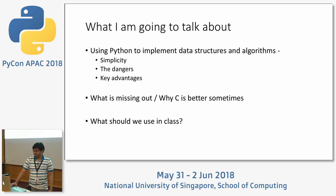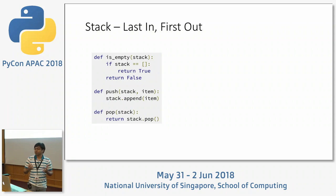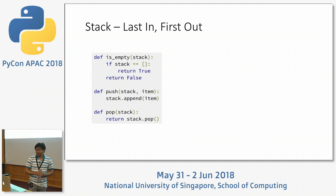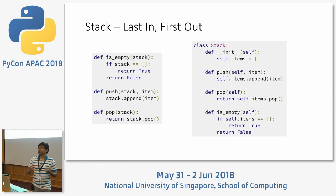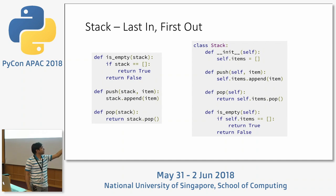Let's jump into some code examples. Stack is a very fundamental and easy data structure — last in, first out. A student already familiar with Python who knows the list data structure can easily come up with code that has three functions: push, pop, and is_empty. Using the append function on a list you can push an item, and using pop you can pop an item — and that's it.